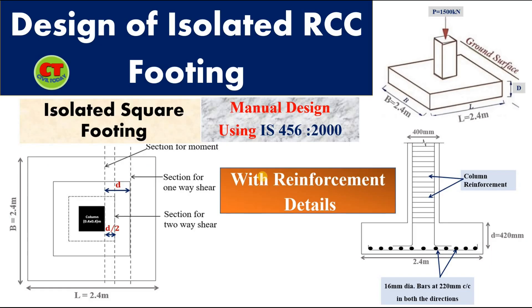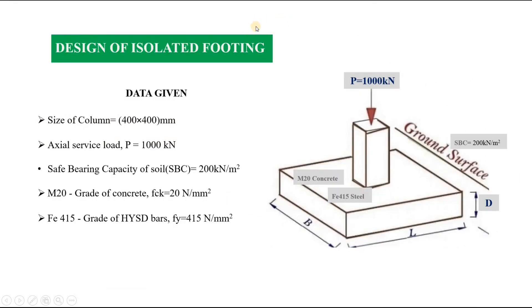Today let us see the design of isolated square footing. Footing which is provided under an individual column separately is called an isolated footing. In this problem, the data given are: size of column is 400 mm by 400 mm, which is a square column, so we have to design the footing as a square footing. The axial service load is given as 1000 kN, safe bearing capacity of soil (SBC) is 200 kN/m², M20 grade of concrete and Fe415 grade of steel are used.